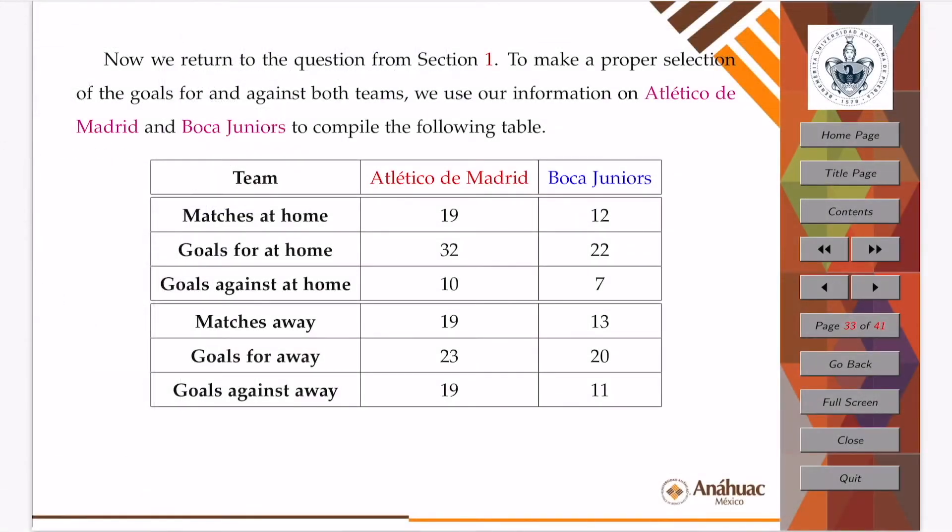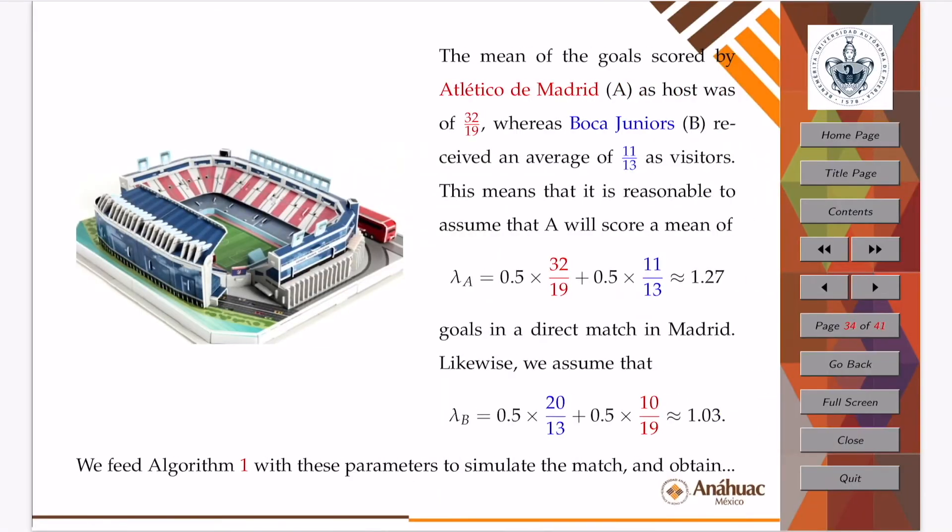If we take the result for granted, then we will be able to actually code it in a programming language to the end of simulating the goals. We can use the information we just had for the histograms of frequencies of the leagues to which these two teams belong to compile this table of matches at home, goals for at home, goals against at home, matches away, goals for away, and goals against away for Atletico and for Boca Juniors.